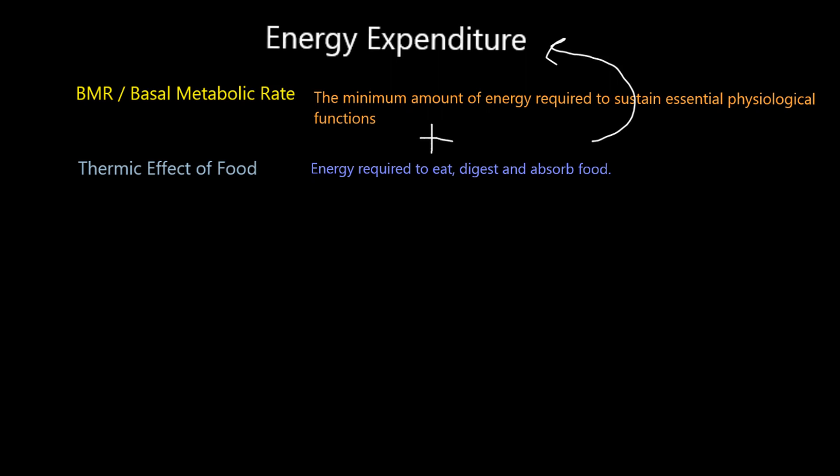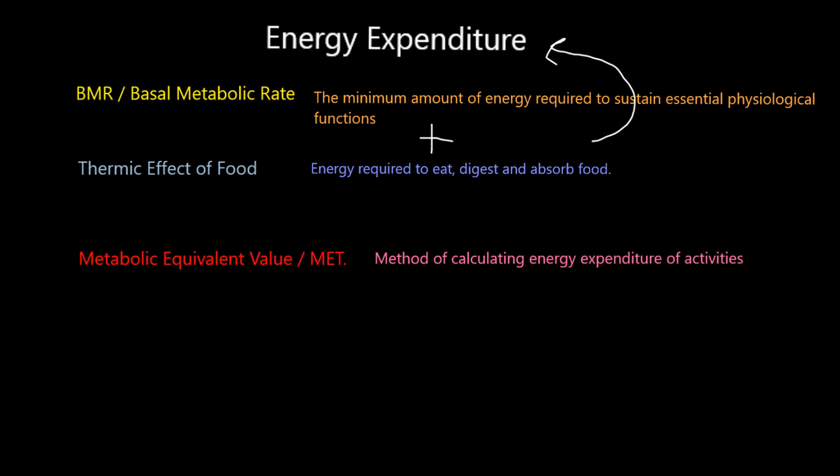Obviously, we don't get the chance to lie around all day eating food doing nothing. We have to do physical activity — anything from walking to playing sports — and all that increases the rate at which we burn calories. What's been produced to try and simplify that are things called METs, or metabolic equivalent values. The metabolic equivalent, or MET, is a method of calculating energy expenditure of certain activities.